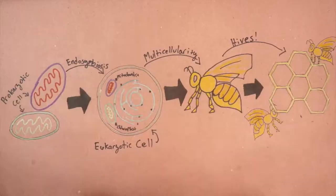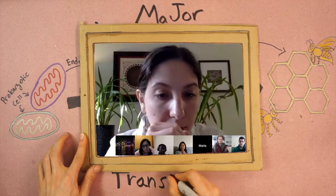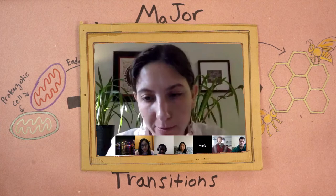Multicellularity represents one of the biggest changes in size in the fossil record. If one looks at the fossil record, there are two points where it changes dramatically in the average size of organisms.